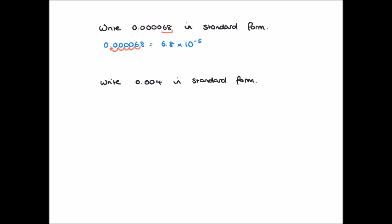We'll finally consider 0.004. This is a small number less than 1, so it will have a negative power of 10. To make the number between 1 and 10, we choose 4. So 0.004 equals 4 times 10 to the power of something. That something tells us how many times we divide 4 by 10, which moves the digits to the right. We move once, twice, and 3 times. So 0.004 is equal to 4 times 10 to the power of negative 3.